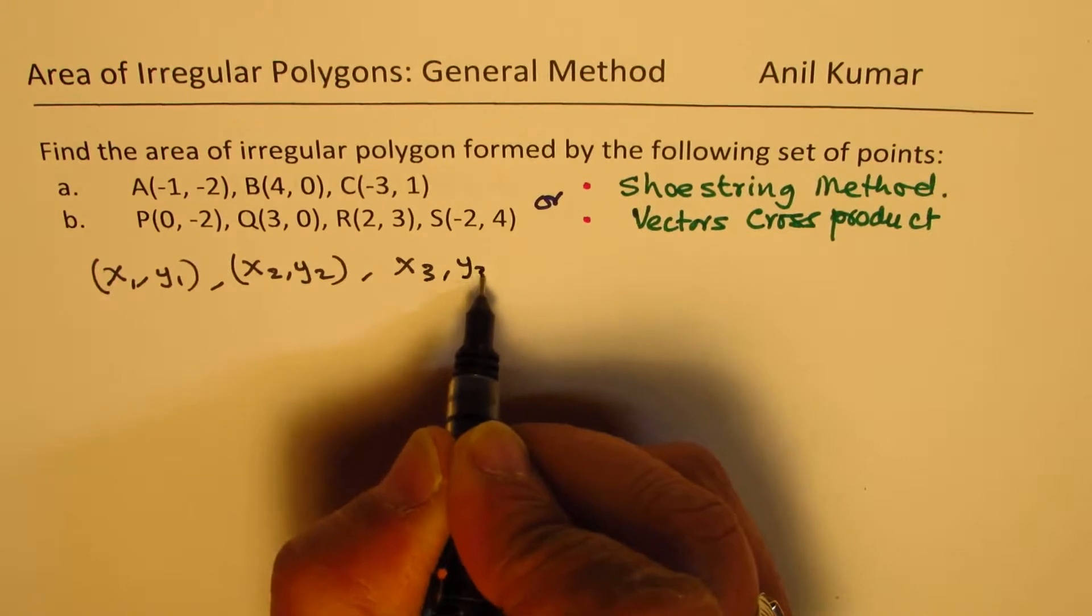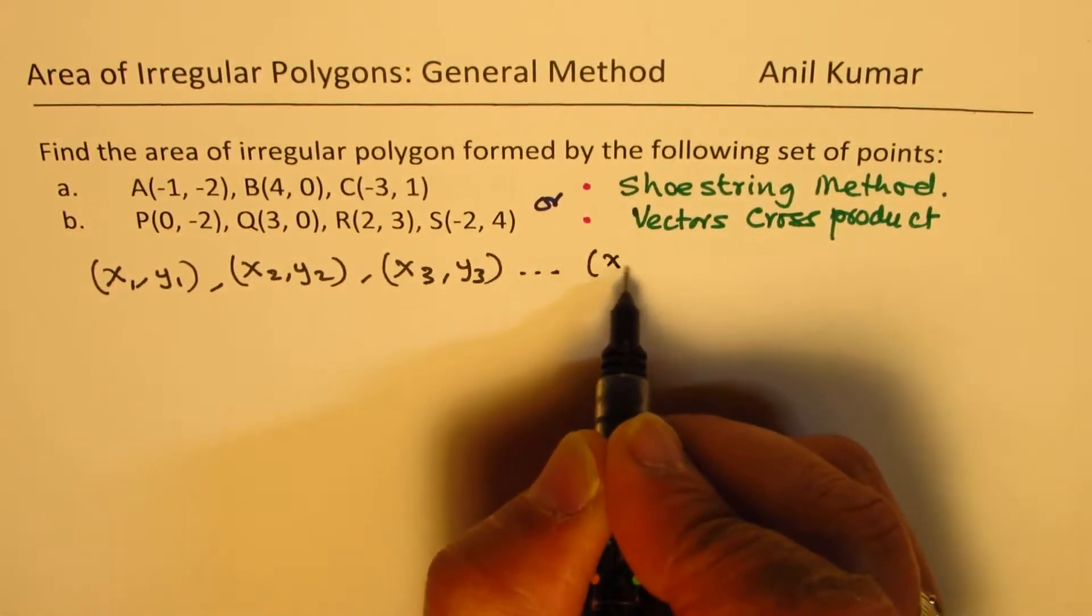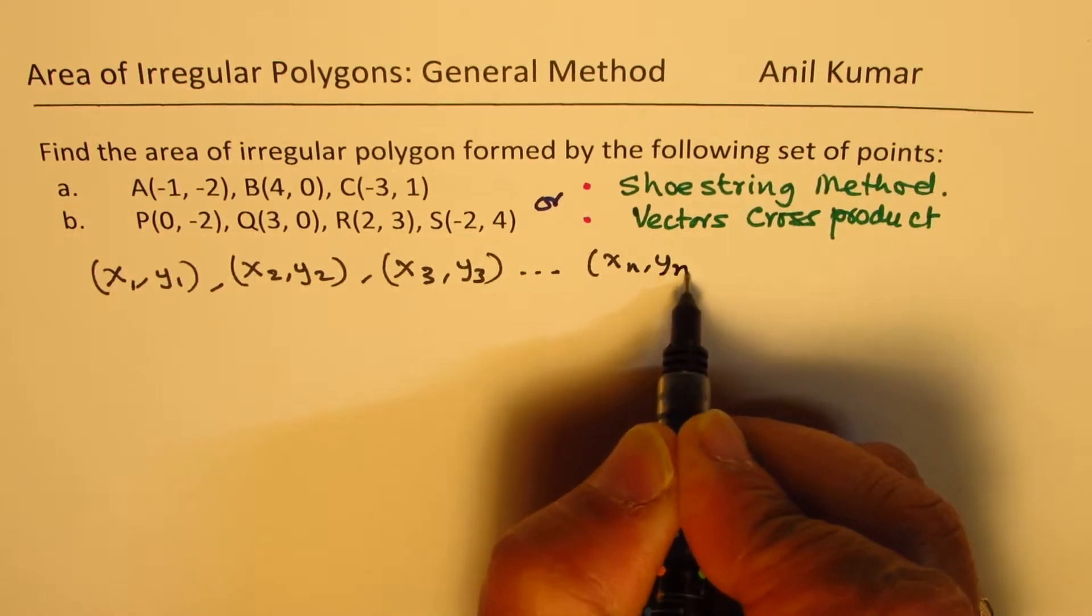x3, y3 as the third one, and so on, we could have xn, yn, any number of coordinates. That is why it is called a general method.